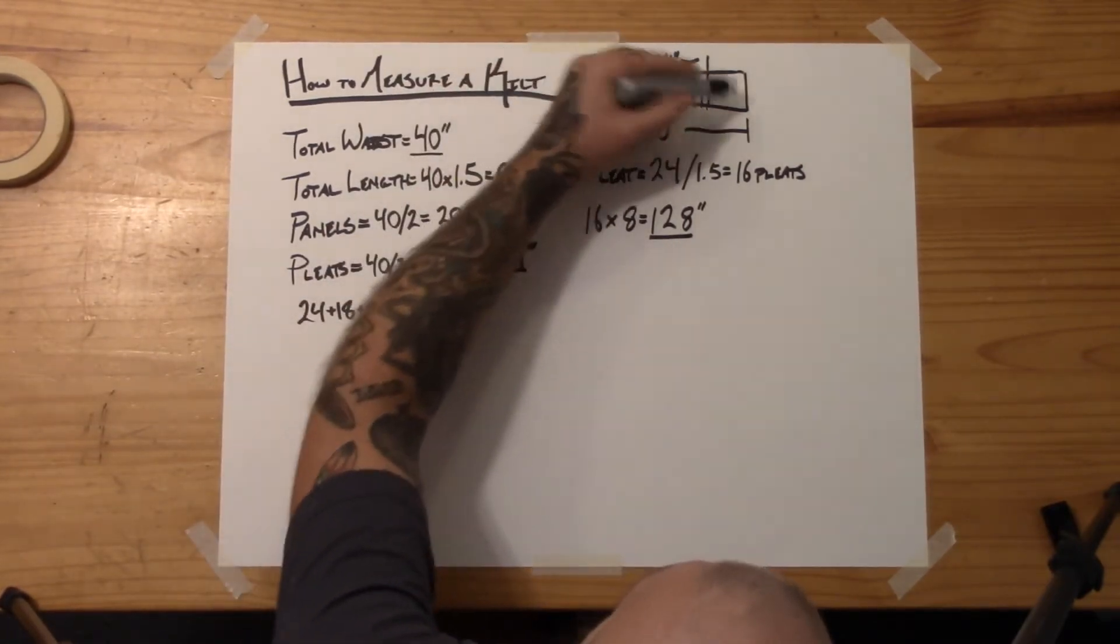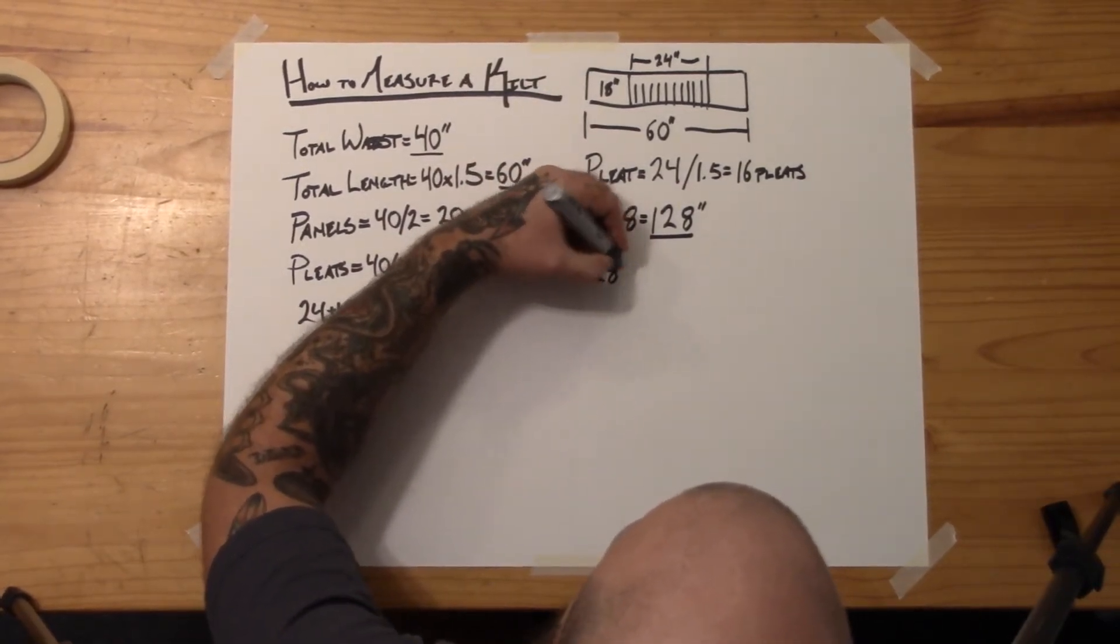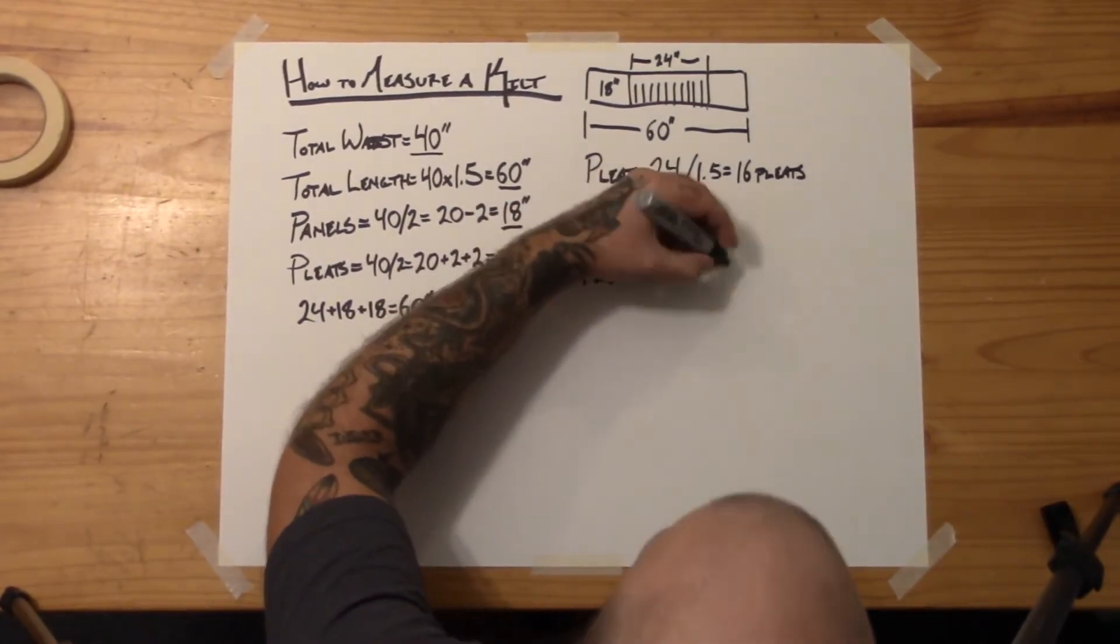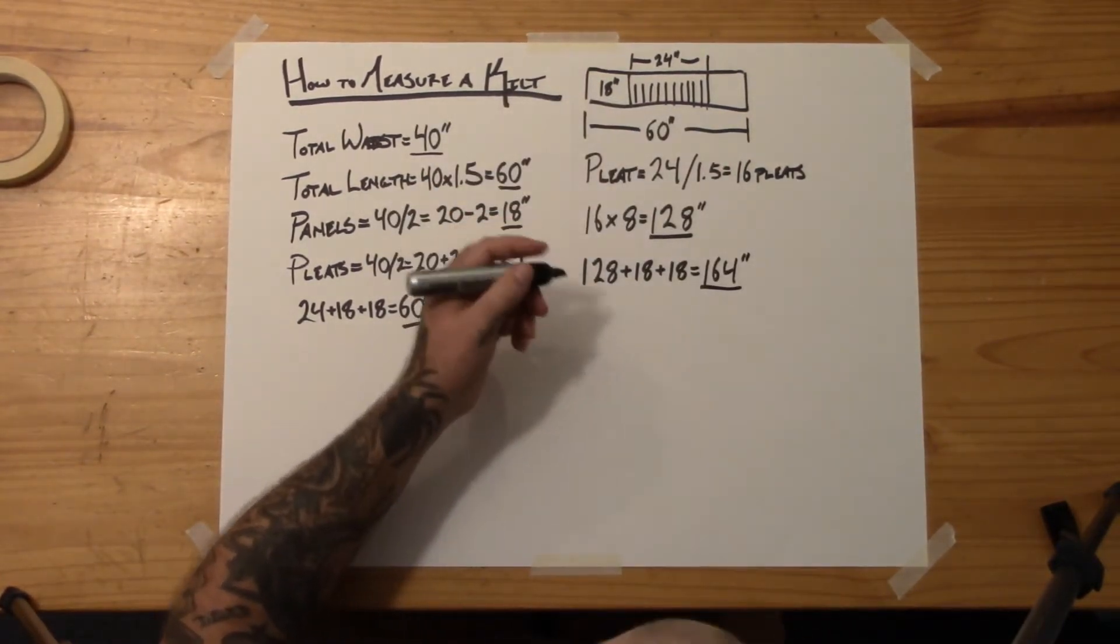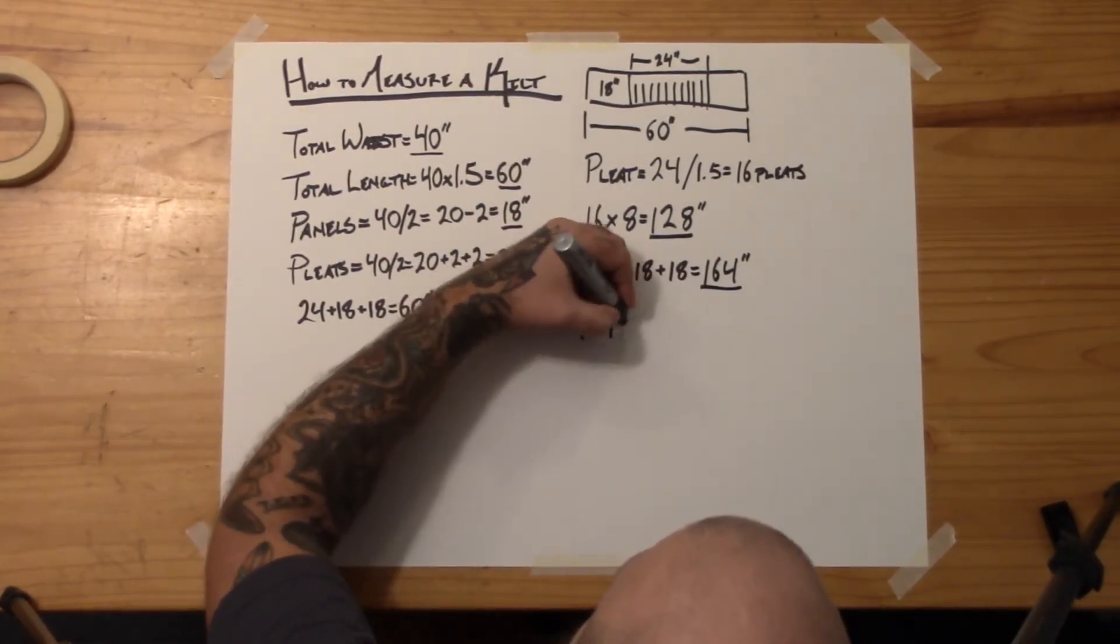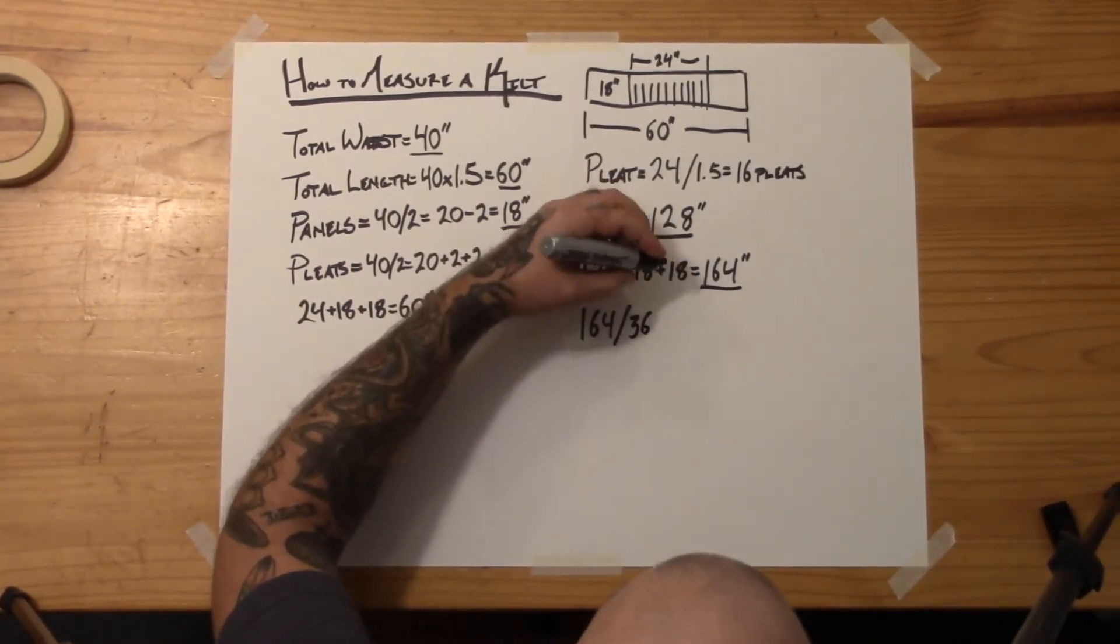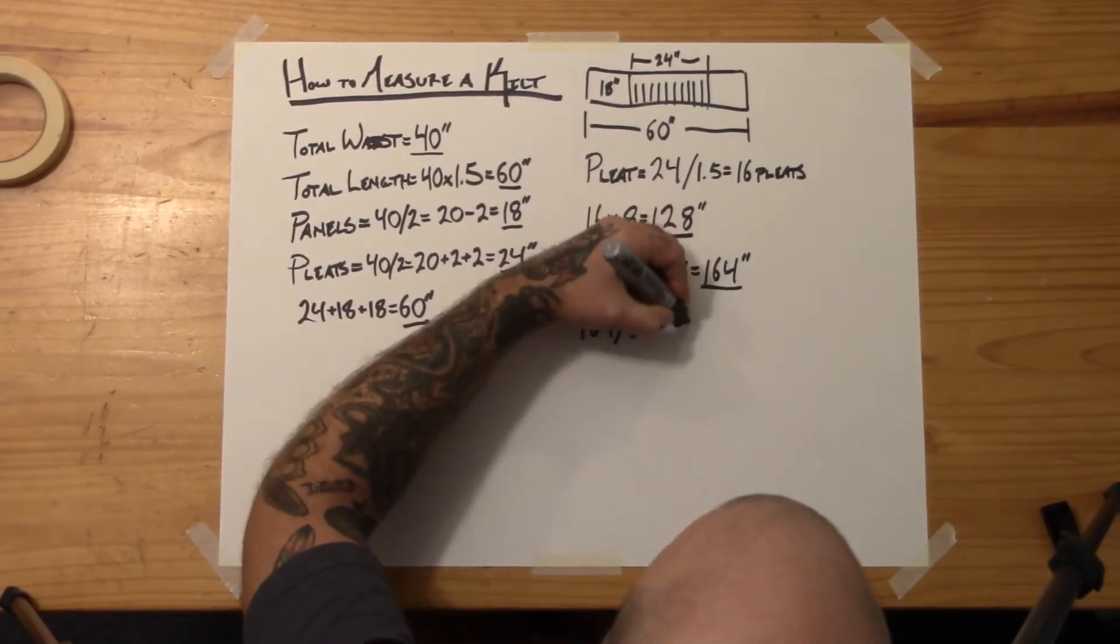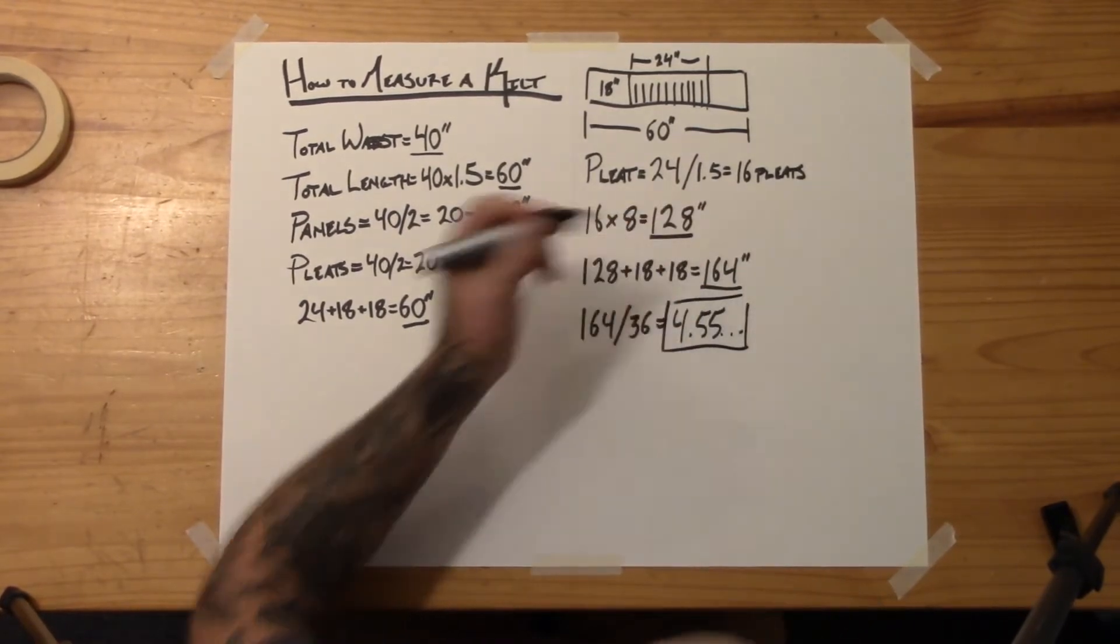That's very nice. So, now I know I need 128 inches of fabric total for this section here. Oh, wait. I still have these two sections. Well, that's easy enough. I know that that's 18 inches. So, I take my 128, I add 18, I add 18 again, and that equals 164 inches of fabric. That's a great thing to have. How much do I need to buy? They don't sell fabric in inches. Well, that's simple enough. I take 164, I divide it by 36 because fabric is sold in yards. Because America. And that is going to equal 4.55 repeating. That's how many yards of fabric I need.